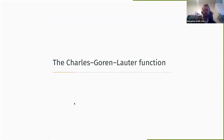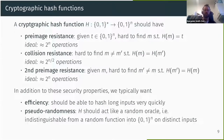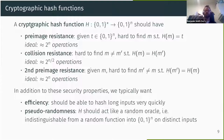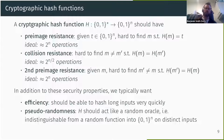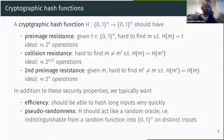Let's look at the Charles-Goren-Lauter hash function again. First, what is a cryptographic hash function? It takes arbitrary-length binary strings as input and outputs some N-bit string — a fixed-length tag. There are three classic security properties: pre-image resistance (hard to find a pre-image for any target), collision resistance (hard to find two inputs giving the same output), and second pre-image resistance, which is like collision resistance but where one of the inputs is fixed in advance.